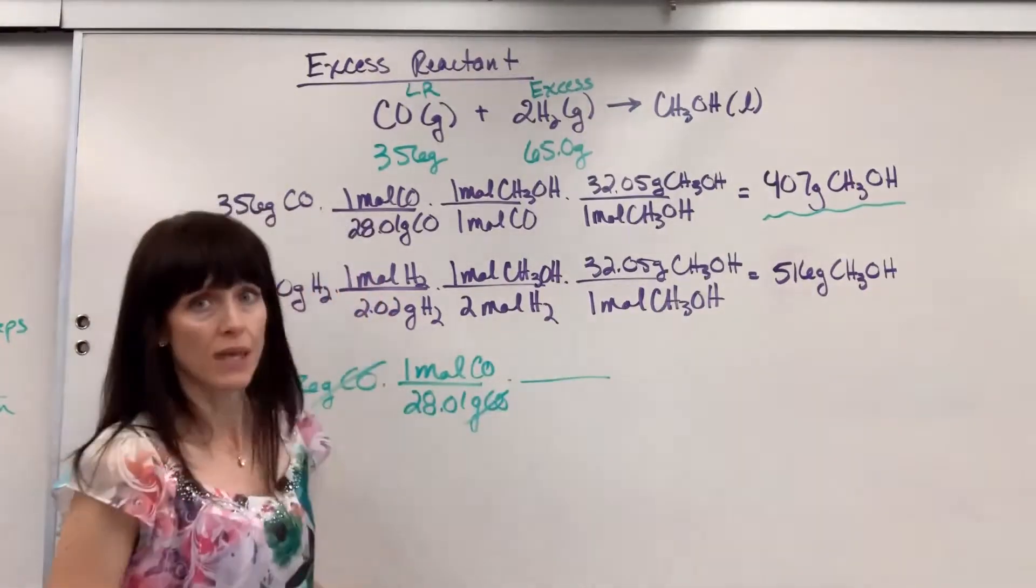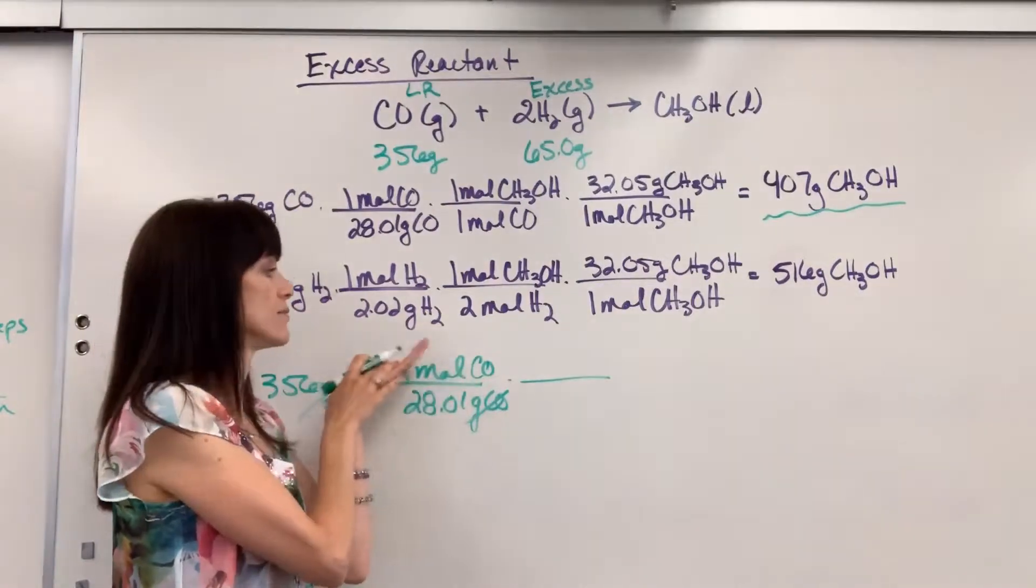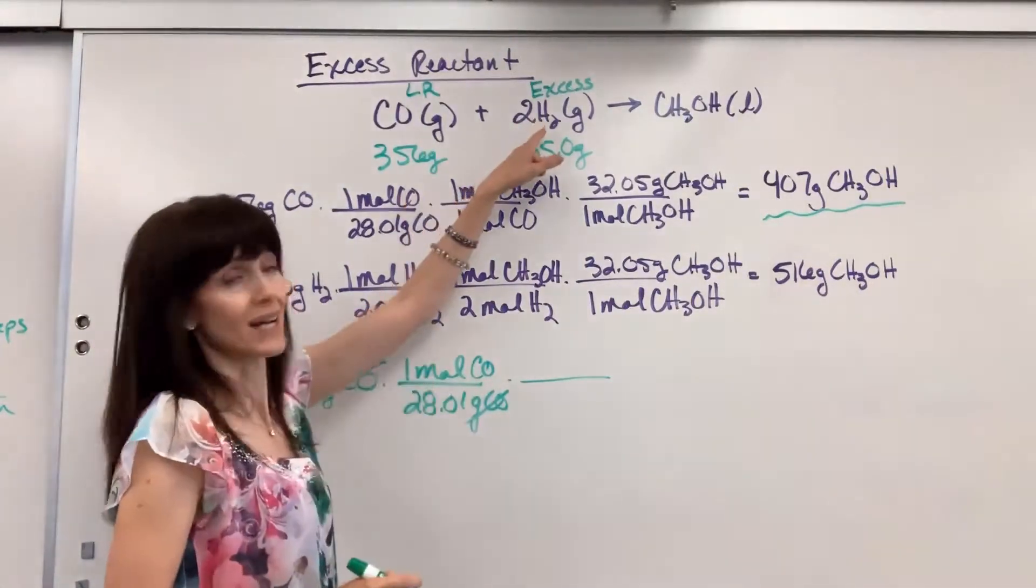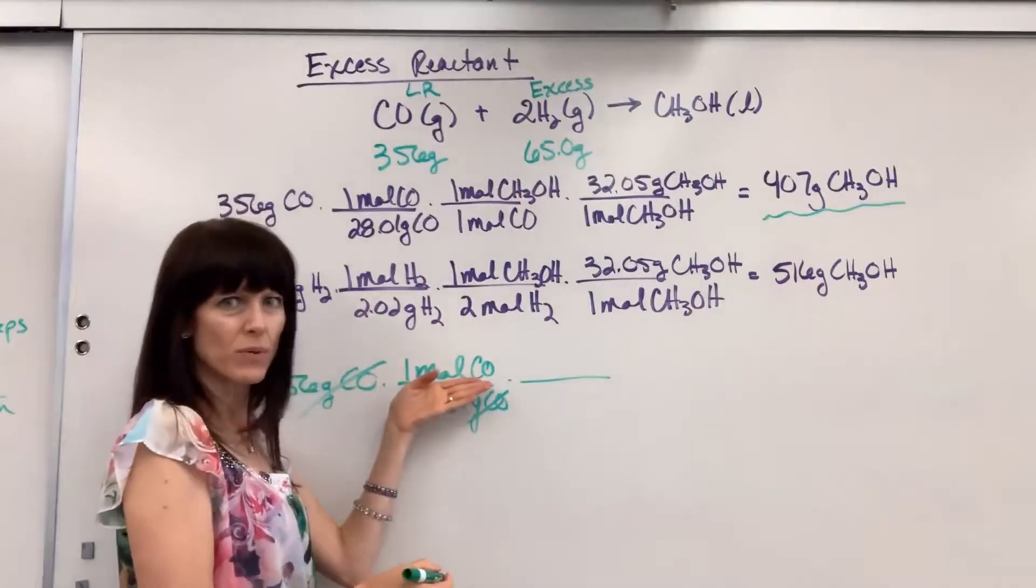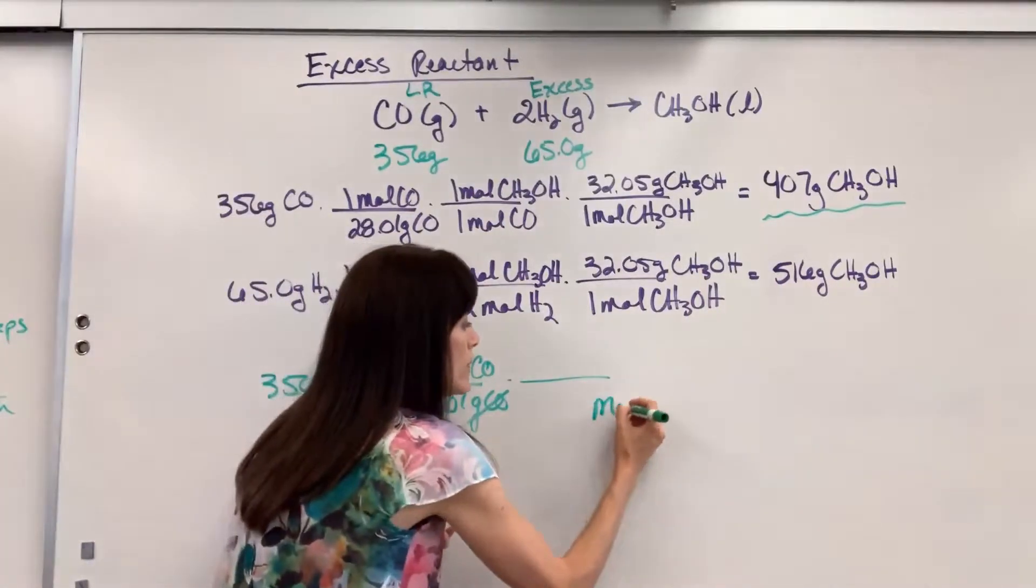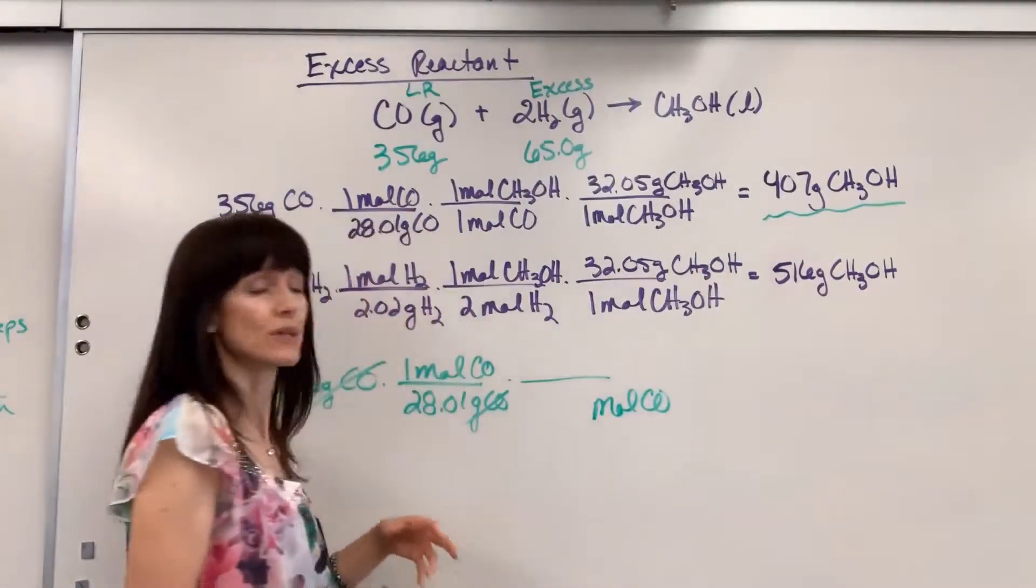Notice I put the grams on the bottom so they cancel and that is in one mole of carbon monoxide. Now grams cancel. If I stopped right there, I'd have moles of carbon monoxide. I want to get to hydrogen. So let's get rid of our moles of CO. That's going to go on the denominator side so it cancels out.